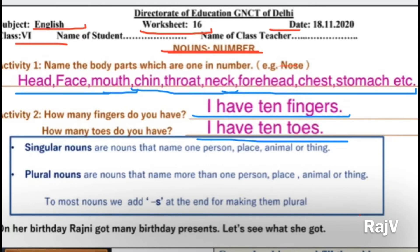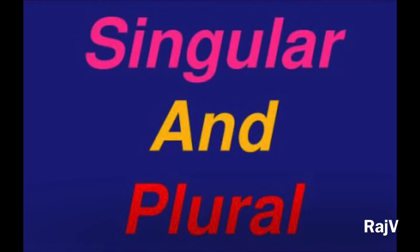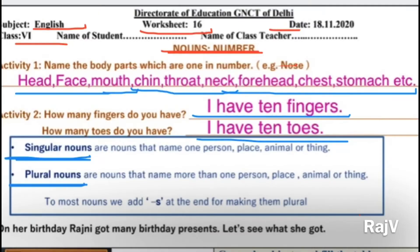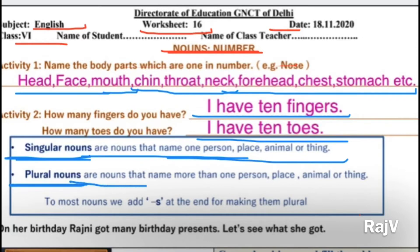Ab aate hain aage humein kya samjhaya hua hai. Yahaan par hai humare singular nouns and plural nouns. Singular nouns are nouns that name one person, place, animal or thing. Noun to aapko pata hai — person ka name, place ka name, animal or thing ka name hai. Ab jo us mein agar hum singular kar lein, toh ek single person ka jo single, one in number hoga, toh hum use kahenge singular noun. Aur agar zyada hoti hain, ek se zyada hain, more than one hain, toh ho jaata hai plural nouns. So plural nouns are nouns that name more than one person, place, animal or thing.